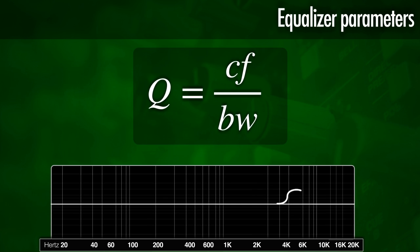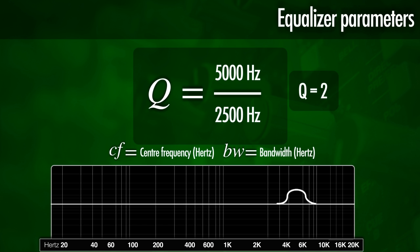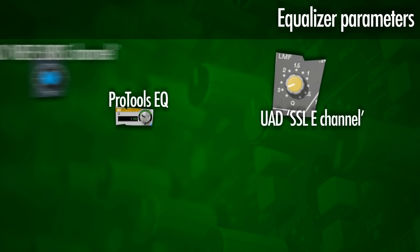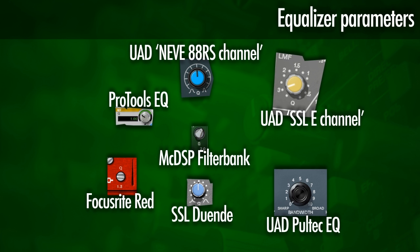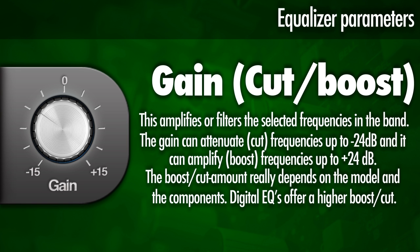The Q is the center frequency of the curve divided by the bandwidth, meaning a low Q value is a wide bandwidth and a high Q value is a narrow bandwidth. This is helpful to know, as some equalizers only show the Q value as a number, while other manufacturers use a symbol to indicate small or wide bandwidth, and some even call the Q value bandwidth. Then we have the gain parameter, also called boost/cut, which is the boost or cut of frequencies.